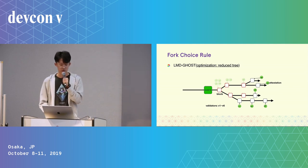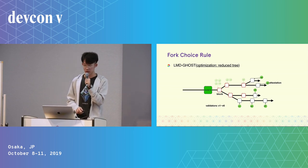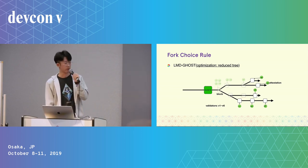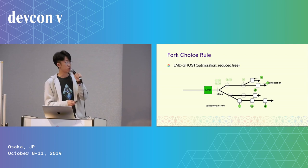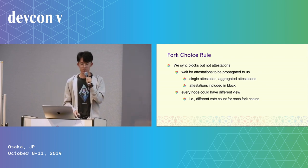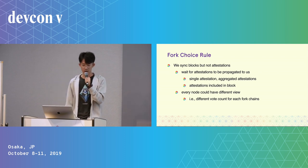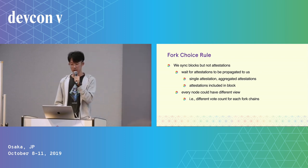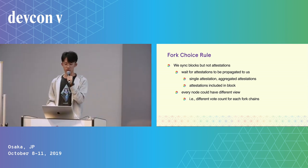There is also an optimization on LMD GHOST: when running the fork-choice rule, we skip blocks that no validators voted for. This saves time and memory when traversing the block tree back and forth. One thing worth mentioning is that we sync blocks but not attestations — we wait for attestations to be propagated to us. They can arrive as single attestations, aggregated attestations, or attestations included in blocks, and we take all three kinds into account in our fork-choice rule.